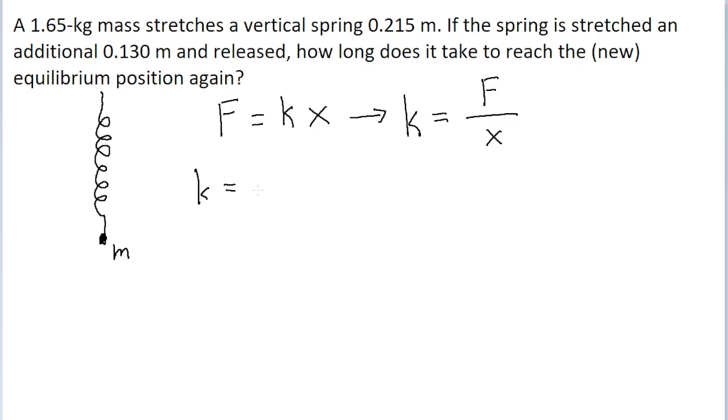So in the case of this problem, we're told that the mass has a mass of 1.65 kilograms. Recall that force due to an object's mass, or rather its weight, is equal to the mass of the object multiplied by the gravitational acceleration, and we're dividing by the displacement. So we're told that the mass is 1.65 kilograms, and the gravitational acceleration is about 9.8 meters per second squared.